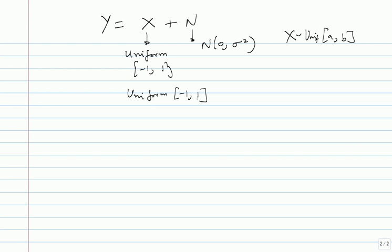You can also go to the Fourier domain and do the convolution as multiplication, then come back. We will be dealing with these kinds of things often. A similar thing can happen in two dimensions: if I have a vector where y₁=x₁+n₁ and y₂=x₂+n₂, a similar picture will evolve in two dimensions.